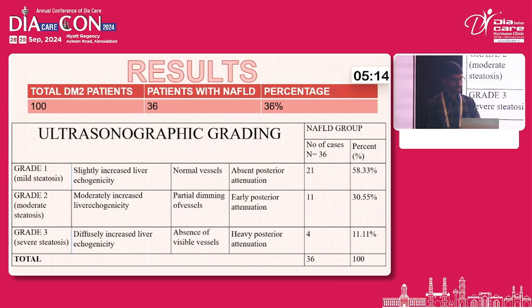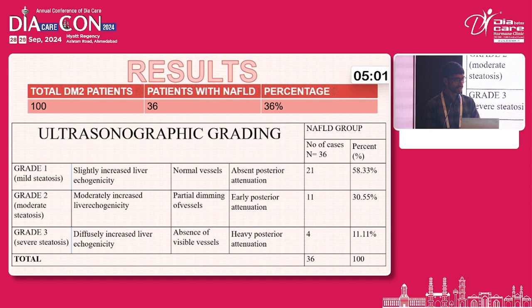Out of 100 type 2 diabetes mellitus patients, 36 patients were found to have non-alcoholic fatty liver disease on ultrasonographic findings. Of these 36, 21 patients had grade 1 mild steatosis, 11 patients had grade 2 moderate steatosis, and 4 patients had grade 3 severe steatosis.